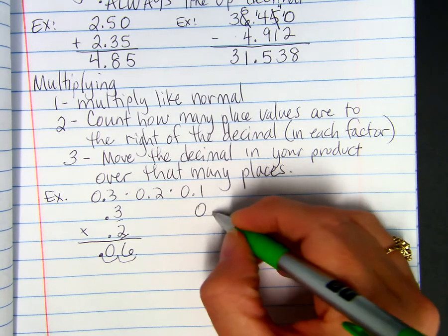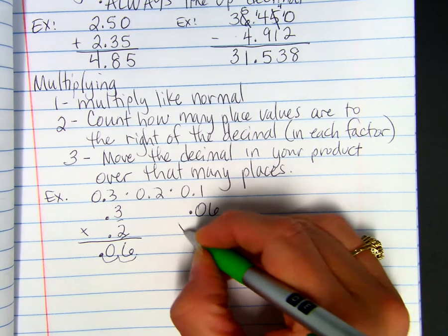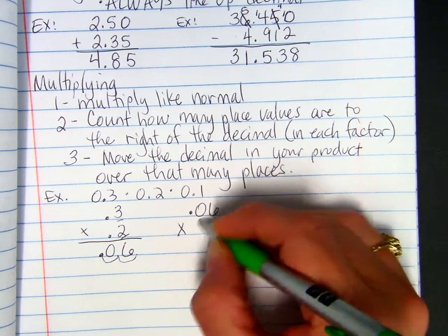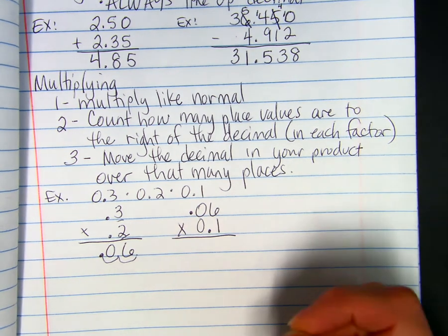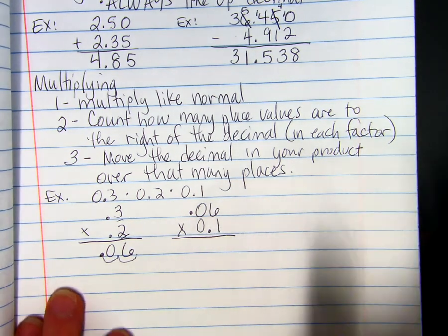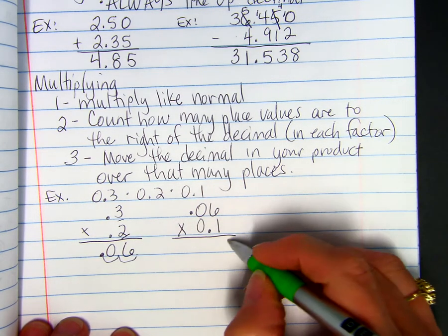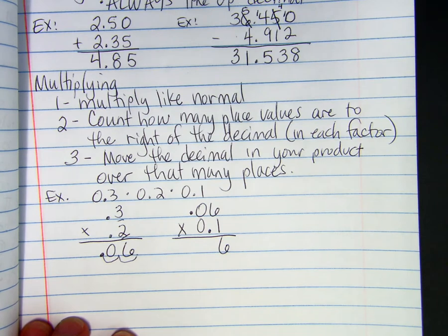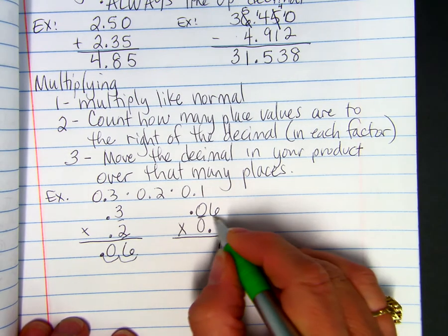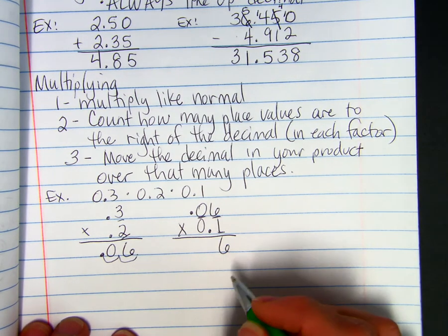So, then we take our six hundredths and times it by one tenth. Notice that I don't have to line up the decimals at all. Just regularly multiplying. 6 times 1 is 6. We count up the decimal places. We have one, two, three.